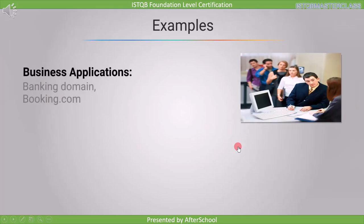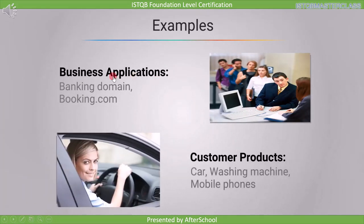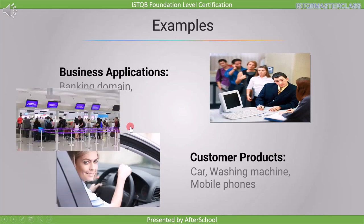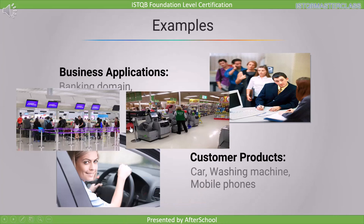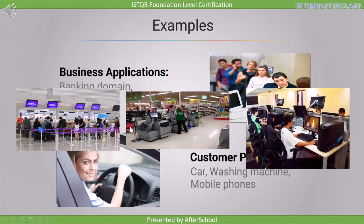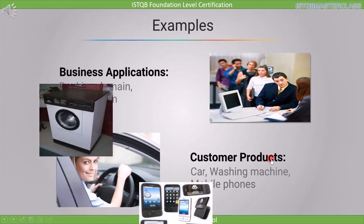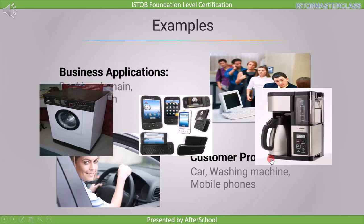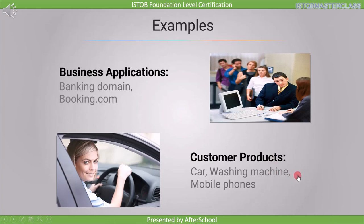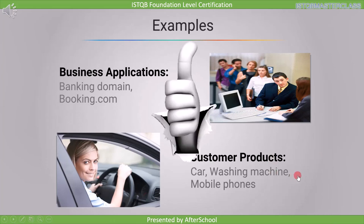Now let's see some applications of software. The first example is business applications and the second is customer products. Examples of business applications include when you go to an airport to book your ticket, or when you go to a supermarket, or when you are working in the office — software is all around us. Some examples of customer products are washing machines, mobile phones, or coffee makers; they all contain software within them. What is your expectation from this software? That it will work whenever we use it. To ensure this, testing of software is required.